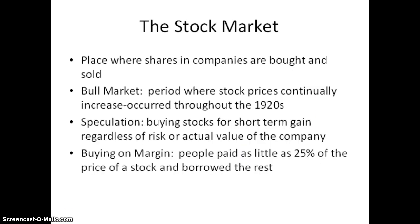The stock market is a place where shares in companies are bought and sold. Throughout the 1920s, there was a bull market — a period where stock prices continually increase. Because of this, people began to buy stocks for short-term gain, regardless of risk or actual value of the company. This is known as speculation.